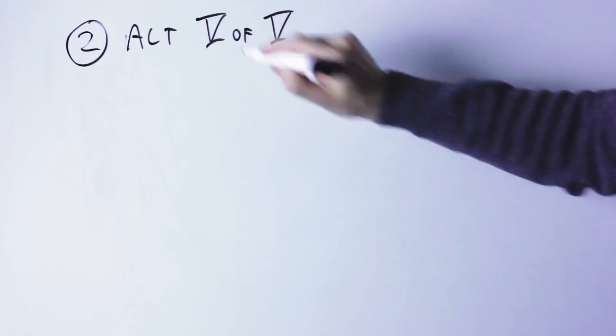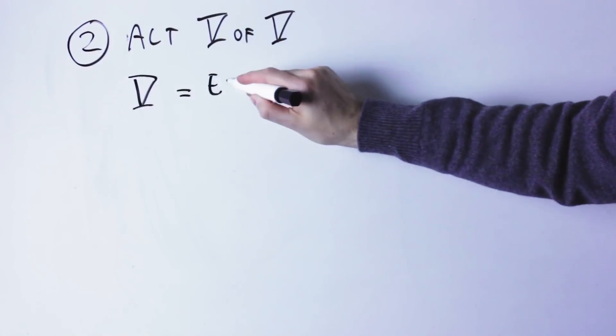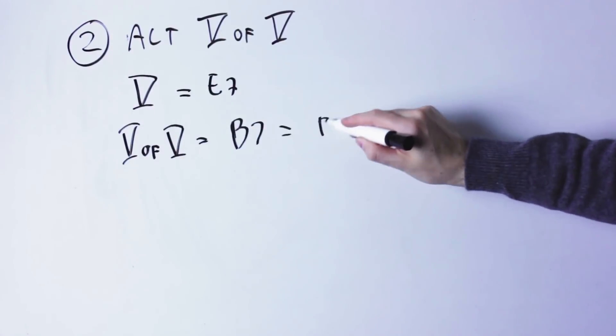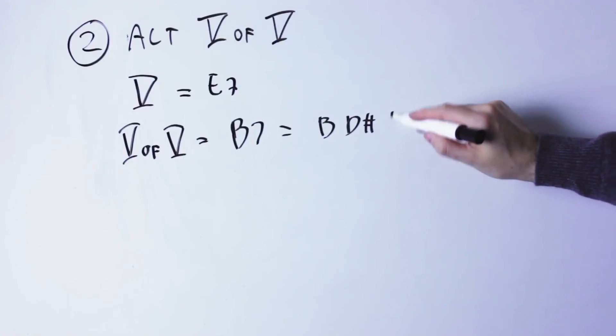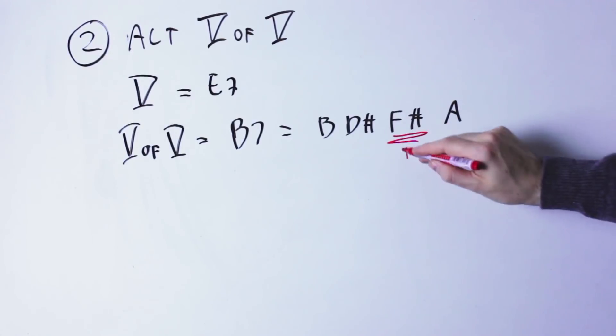Explanation number three, the Tristan chord is an altered five of five. The five chord in the key of A minor is E7. The five of five is the dominant chord of E7, which would be B7, notes B D♯ F♯ A.